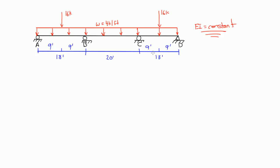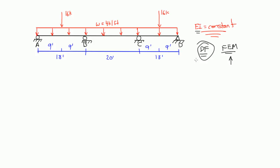So when we're going to do the moment distribution — and also note that EI is constant — the first thing we want to do is calculate the distribution factor and the fixed end moments. I'm actually going to do the fixed end moments first because there's something special about the distribution factor we need to know. So let's actually do the fixed end moments first.